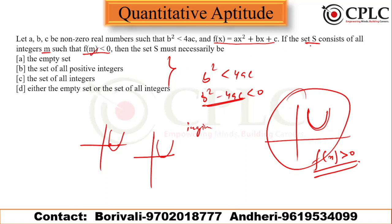The question states that set S is the set of all integers where the function value is less than zero. Since f(m) < 0 is impossible when discriminant < 0 and a > 0, no such integers exist. So S must be the empty set. It cannot be all integers. So option A (empty set) is possible, or option D.